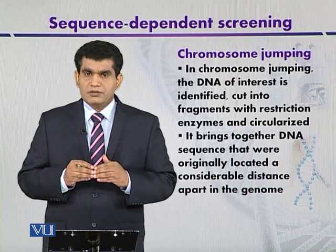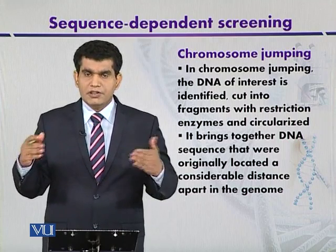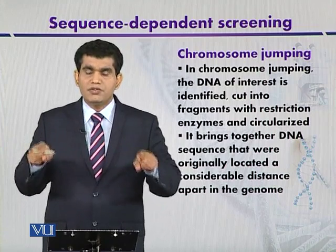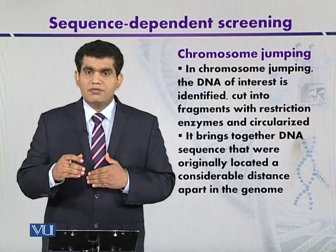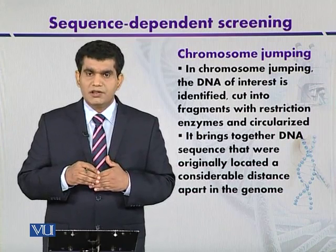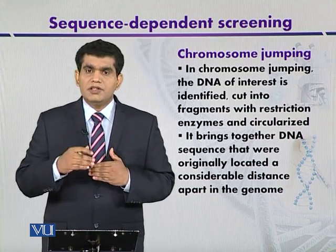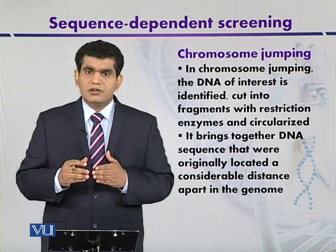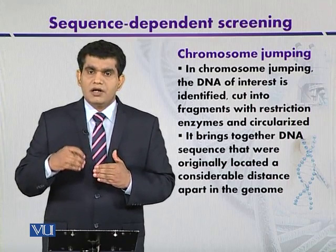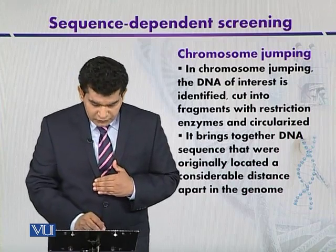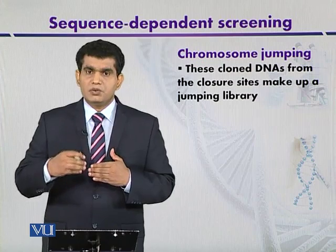The larger DNA fragments are circularized so that genes present at the ends — like the X gene at one end and Y gene at the other end — are far apart from each other. When we circularize the DNA, those genes that are at distant locations will come close to each other. Then after circularization, the closure sites are again digested with a restriction enzyme so that genes once located at different locations come close to each other.